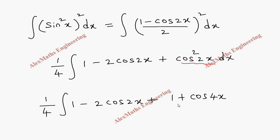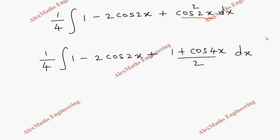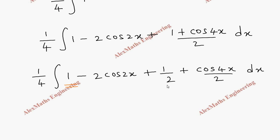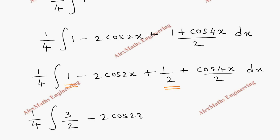The rest of the terms are written as they are, and cos²2x is replaced by (1 + cos 4x) / 2. We split the last term and divide individually by 2, giving 1/2 + cos4x / 2. Adding 1 and 1/2 gives 3/2, so we have (1/4) integral of (3/2 - 2cos2x + cos4x/2) dx.